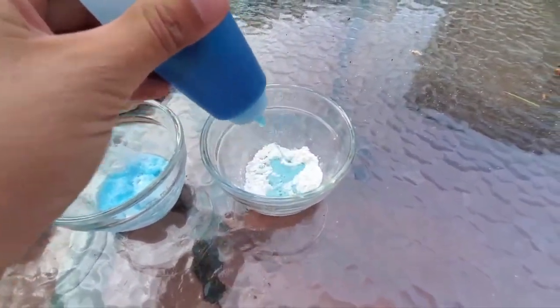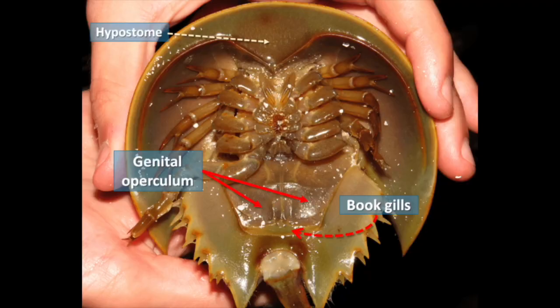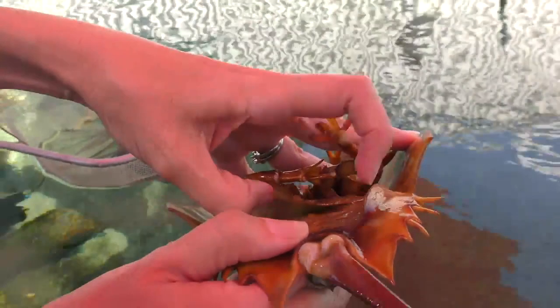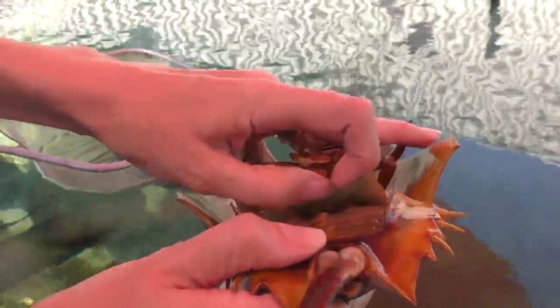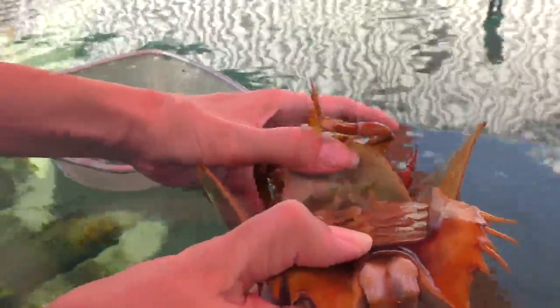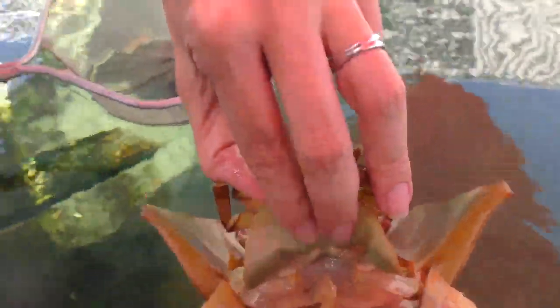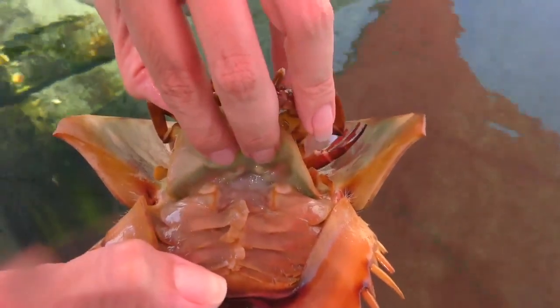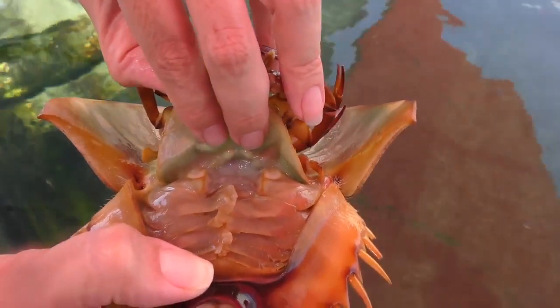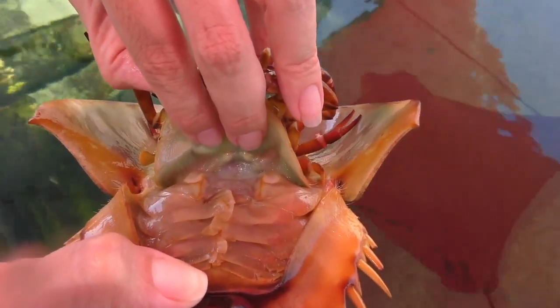Another important characteristic of the horseshoe crab is its flap-shaped gills. Horseshoe crabs breathe through specialized respiratory organs called book gills, which are located on the undersides of their abdomen. The gills extract oxygen from water and remove carbon dioxide, while also helping to regulate salt and water balance in their bodies. Horseshoe crabs can adapt their gills' function to different environments, such as brackish water or areas with low oxygen levels, and are optimized for extracting oxygen from their aquatic environment.